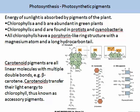Chlorophyll A is one photosynthetic pigment but there are others. Chlorophyll B is another photosynthetic pigment and so are the carotenoid pigments. Chlorophyll A and chlorophyll B are abundant in green plants. There are also chlorophyll C and D, which are found in protists and cyanobacteria. All chlorophylls have a porphyrin-like ring structure with a magnesium atom and a long hydrocarbon tail. Carotenoid pigments are all linear molecules with multiple double bonds — carotene is an example. Carotenes transfer their light energy to chlorophyll, and are thus known as accessory pigments.